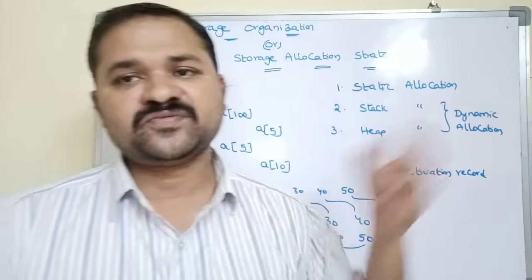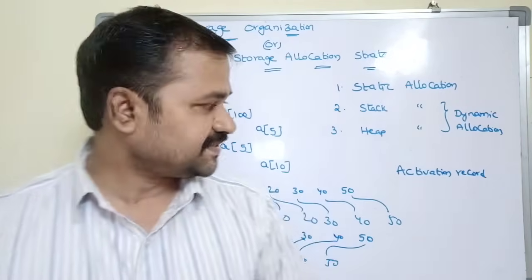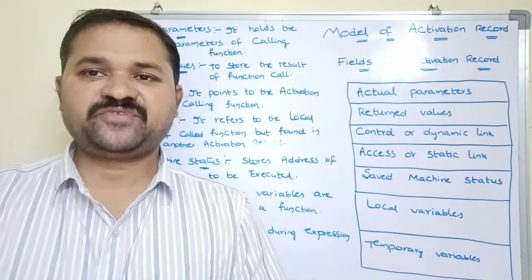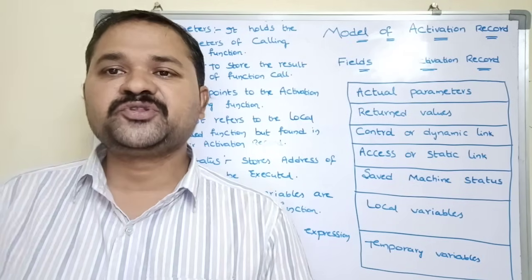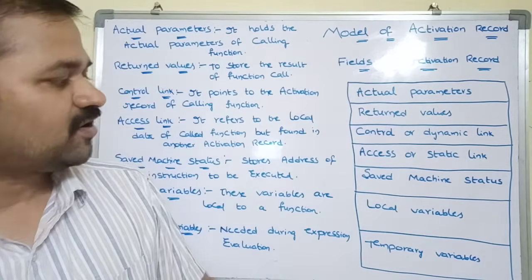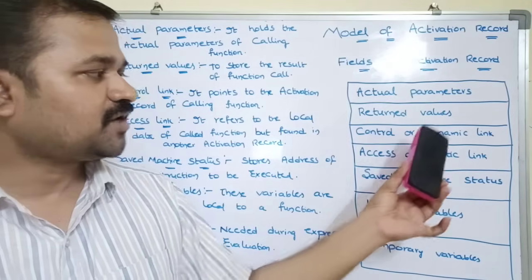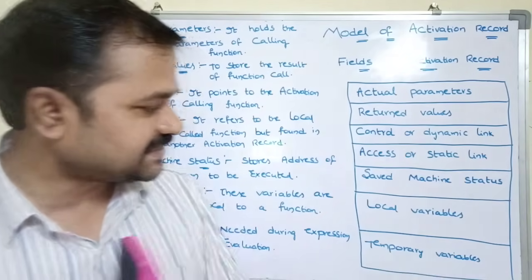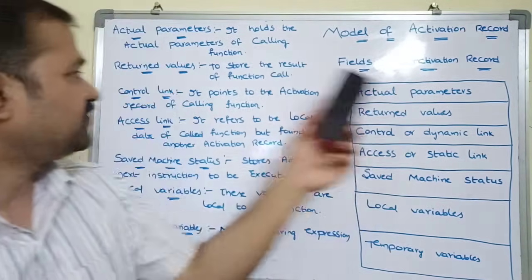If there are five functions in a program, then five activation records will be created for the corresponding five functions. An activation record mainly contains seven fields: actual parameters, return values, control or dynamic link, access or static link, saved machine status, local variables, and temporary variables.